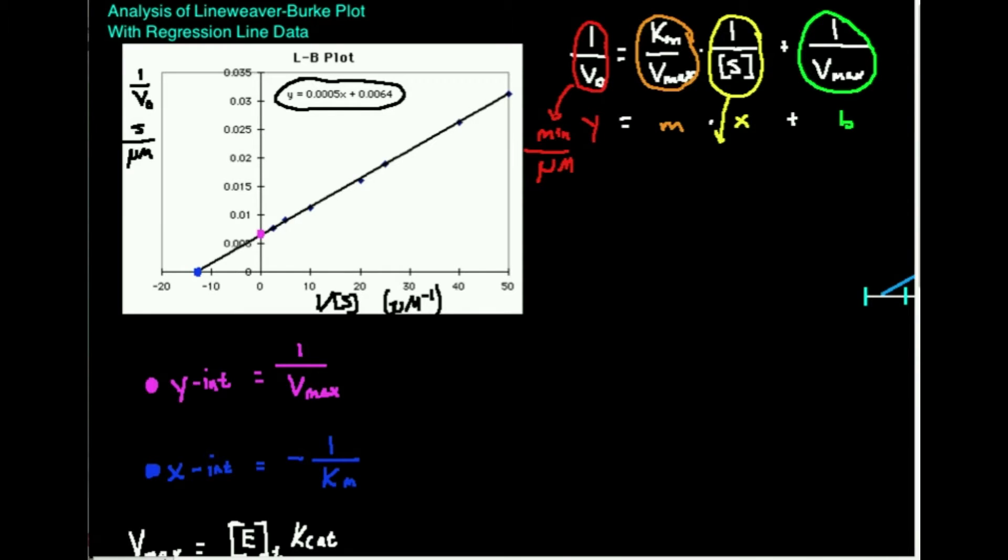We talked a lot in the previous videos about Michaelis-Menten kinetics and how we can transform the Michaelis-Menten equation into the equation that you see right here. This is called the Lineweaver-Burk equation. The reason this equation is very useful for determining kinetic parameters is because it's in the form of y equals mx plus b, which is the generic equation for a straight line. Straight lines are much easier to deal with than the Michaelis-Menten curve, which is hyperbolic in nature. We would much prefer to force something into a y equals mx plus b if possible.